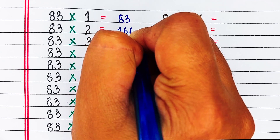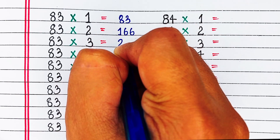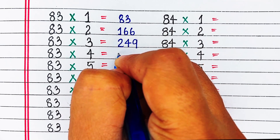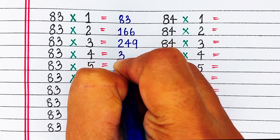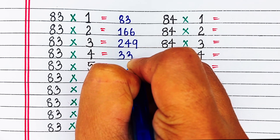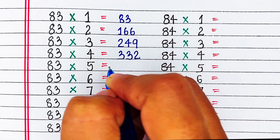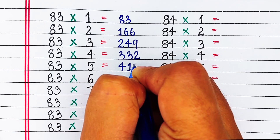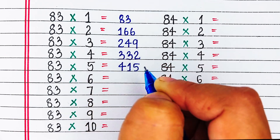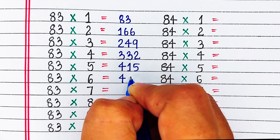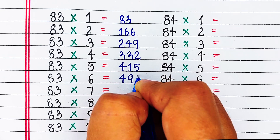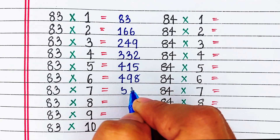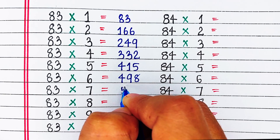Next is table of 83. 83 1s are 83, 83 2s are 166, 83 3s are 249, 83 4s are 332, 83 5s are 415.